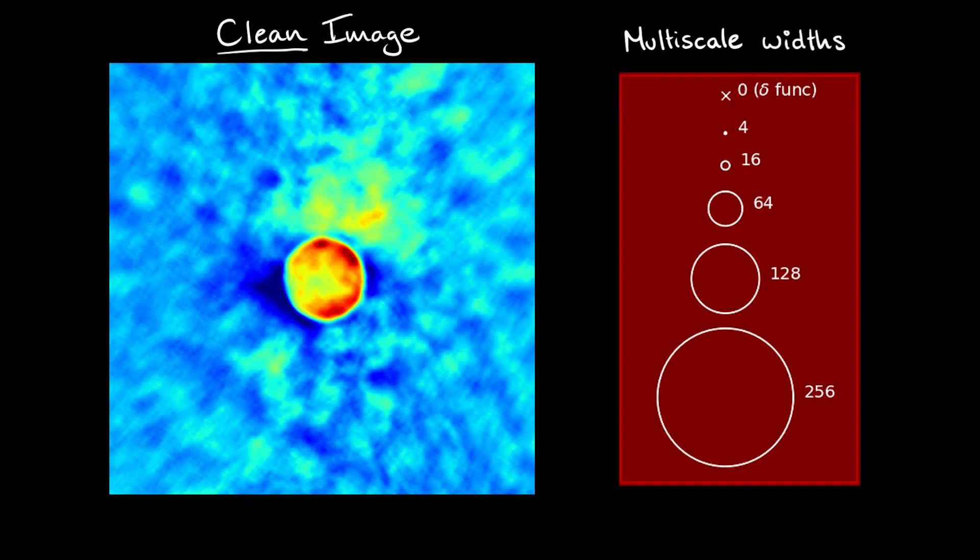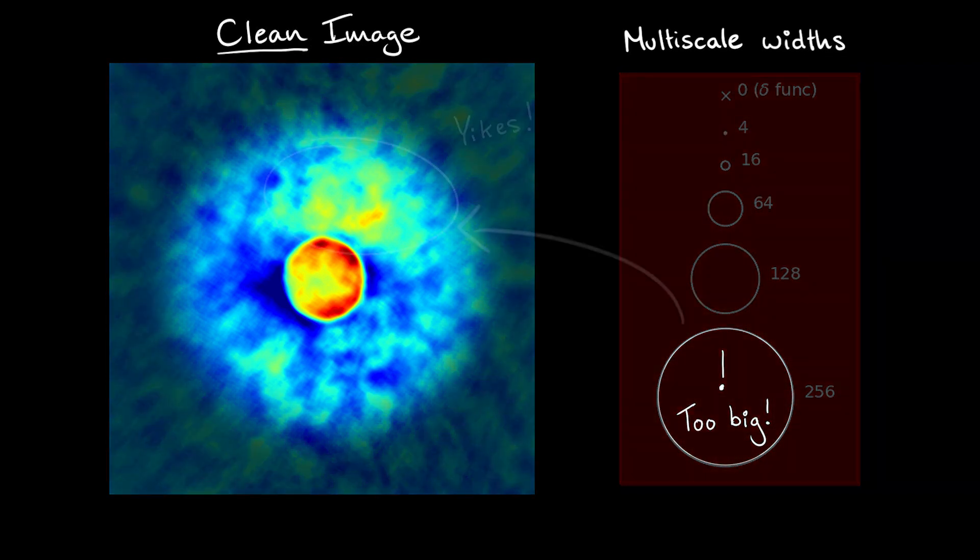Make sure you don't choose size scales that are larger than those seen in your image, or close to the maximum recoverable scale of your data, as we have in this example of Europa, where we include a 256 pixel scale which is much too large. This could cause you to include side lobes and artifacts in the model.